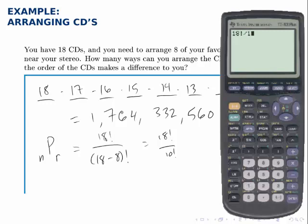And then divide that by 10 factorial. Go over to the math menu, go over to probability, number 4. We get the same answer, 1,764,332,560.